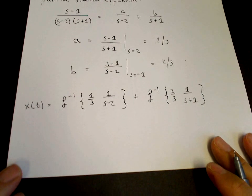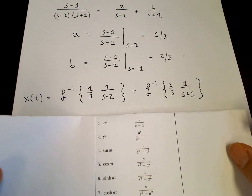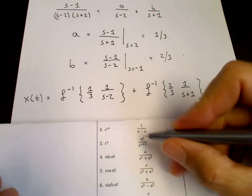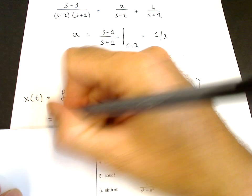That looks more like our table. Let's have a look again. So we're looking at the exponential term. So 1 over S minus A is e to the At.